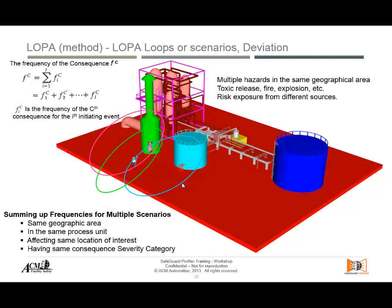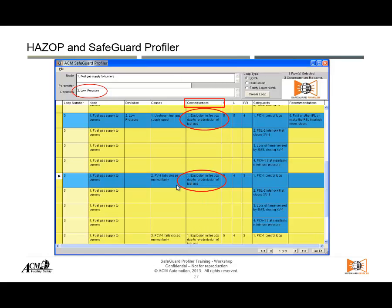I can concentrate on what's really happening with the right overview and the right level of detail, rather than playing around with spreadsheets, finding columns and rows, and getting lost. Safeguard Profiler lets me see the scenarios from a different perspective, specifically focused on analyzing the scenario without getting lost in calculations. Once we get the HAZOP imported, we start picking up the HAZOP scenarios that need to be put together, identifying those that have the same consequences and the same severity — for example, severity 5.